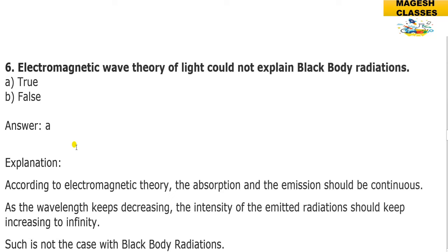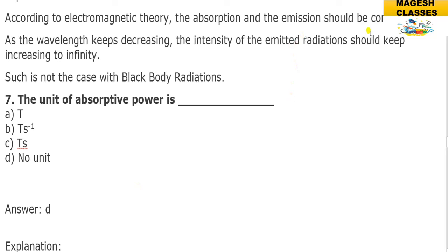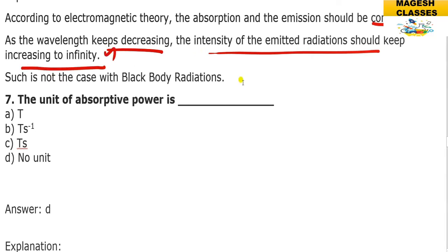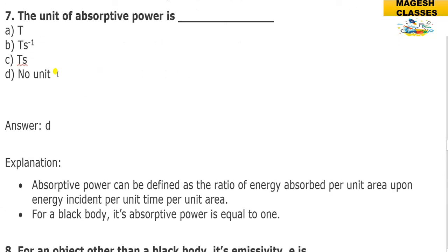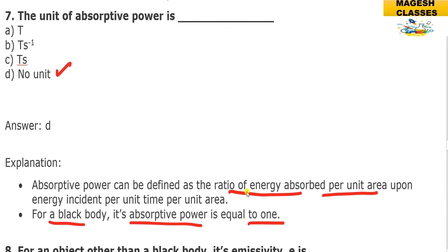Electromagnetic wave theory of light could not explain black body radiation — the answer is true. According to electromagnetic theory, absorption and emission should be continuous, and as wavelength decreases intensity should keep increasing to infinity, which is not observed. The absorptive power has no unit; it is defined as the ratio of energy absorbed per unit area.